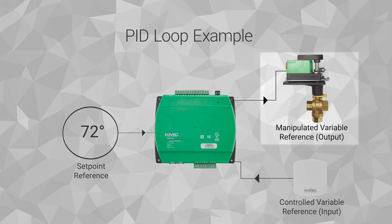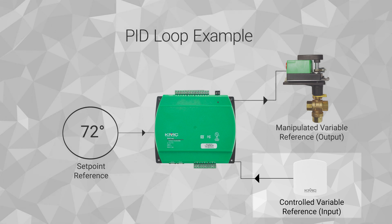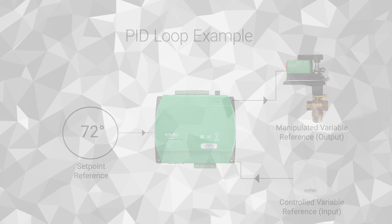The output of the control loop controls the valve through the BACnet loop object's manipulated variable reference property. The zone temperature sensor is represented to the loop with the BACnet loop object's controlled variable reference property and provides feedback to the loop. When the zone temperature does not match the set point, the loop commands the valve to open or close until the zone temperature matches the set point.